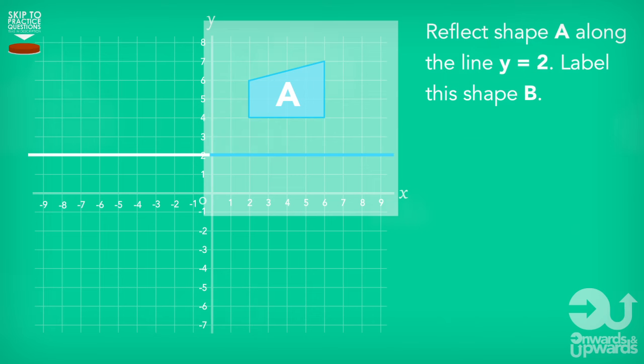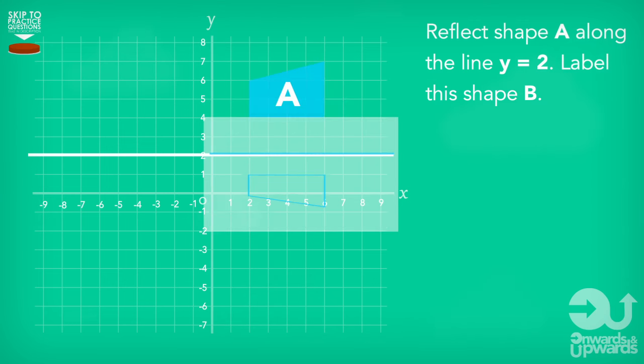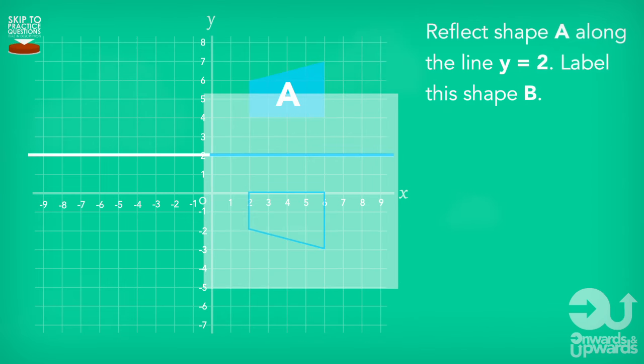Now, to show us where the reflected shape will end up, we reverse the tracing paper and align the mirror line on the tracing paper with the mirror line in the question. Where the shape ends up is where the reflected version of our shape will transform to.